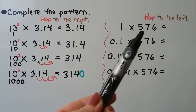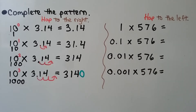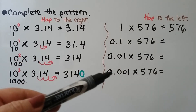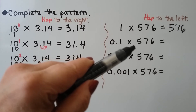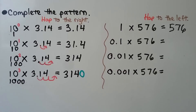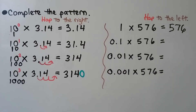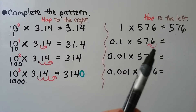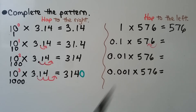Here we have one times a whole number, five hundred seventy-six. We multiply any number times one — it keeps its identity — so it'll equal five hundred seventy-six. We're going to multiply it by one-tenth, one-hundredth, and one-thousandth. Because they all involve the number one, our product is going to have a five-seven-six in it. We're just going to be moving the decimal point. We have one-tenth, so it's going to hop to the left one hop. Five hundred seventy-six is a whole number, so the decimal point is over here. When it moves one hop to the left, it's going to be in between the seven and the six. It equals fifty-seven and six-tenths.